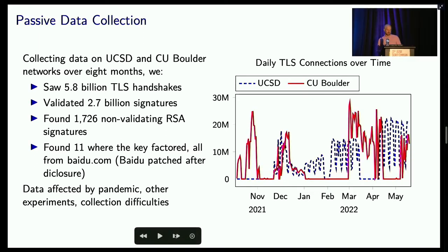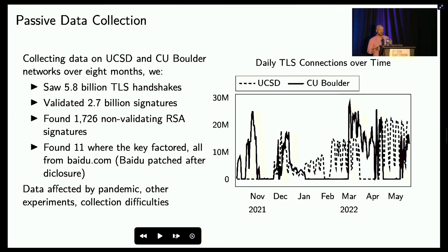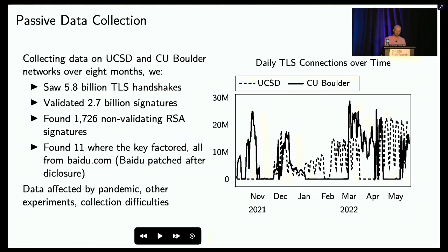The main message is that servers are sending out non-validating signatures. We found 1,700 of them and managed to factor the keys in 11 connections. All of these came from Baidu.com. We disclosed to Baidu, and they changed their keys and patched their code by verifying signatures before sending them out.